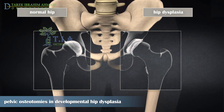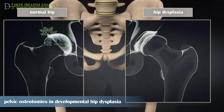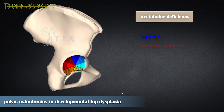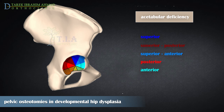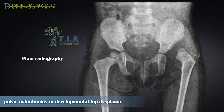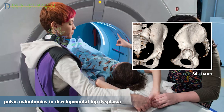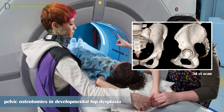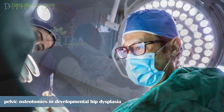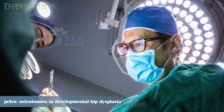Structural defect in the acetabulum is a constant finding in developmental hip dysplasia. It can occasionally be directly superior, anterosuperior, or posterosuperior. Surgical correction of dysplasia should include correction of this defect to improve femoral head coverage. Standard pelvic radiographs do not differentiate anterior or posterior deficiency; a 3D CT greatly helps determine an individual hip's exact morphology.